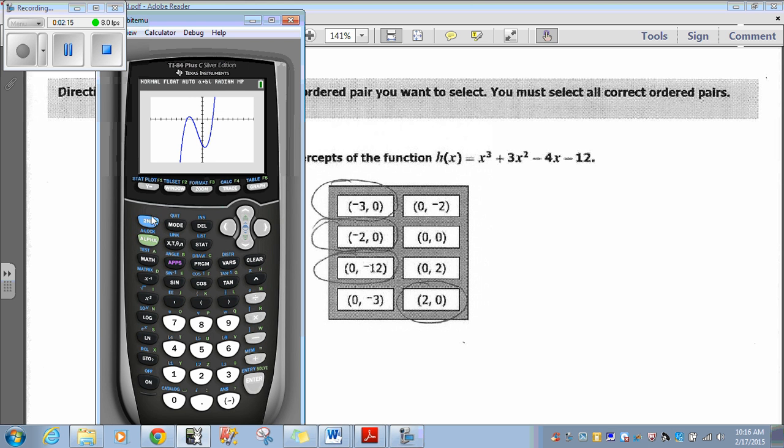Then if you just want to double check those zeros, all you'd have to do is second trace 0 and then go for each. You have to do all four. In this case, there are four. 1, 2, 3, 4 in order to get this answer correct. Selecting only two or three of them, you'll get it incorrect.